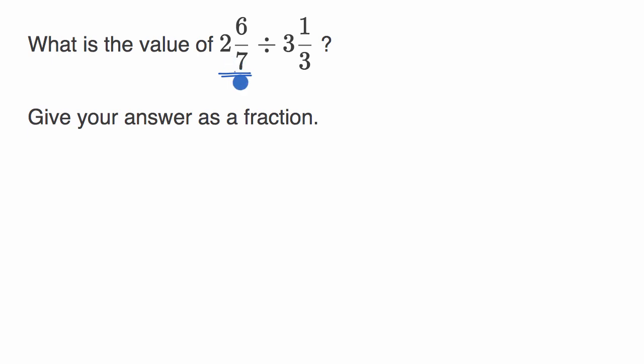Sometimes folks would call them improper fractions because the numerator will be bigger than the denominator. So two and six-sevenths is the same thing as two plus six-sevenths, which is the same thing, two is the same thing as 14 over seven. 14 over seven plus six-sevenths.